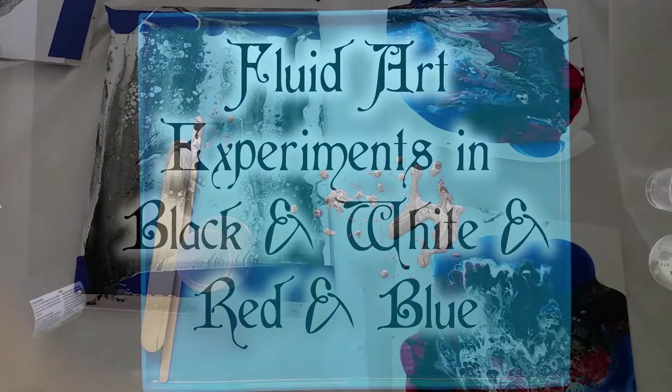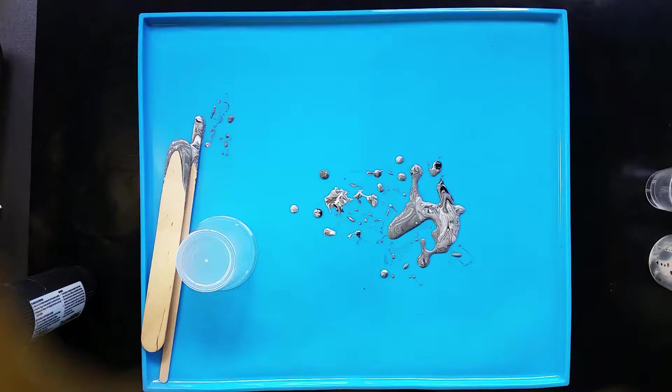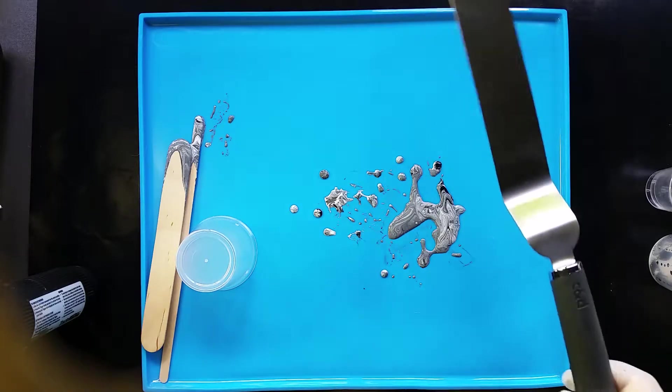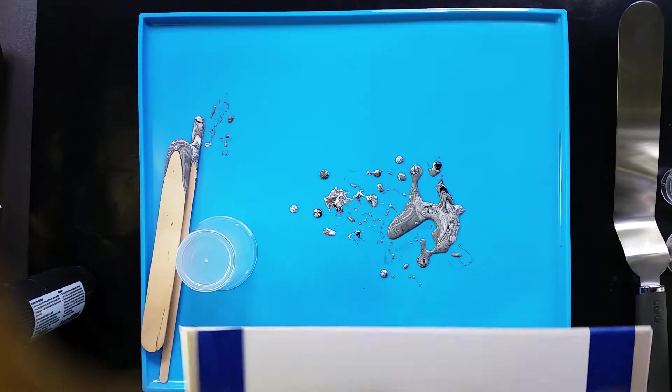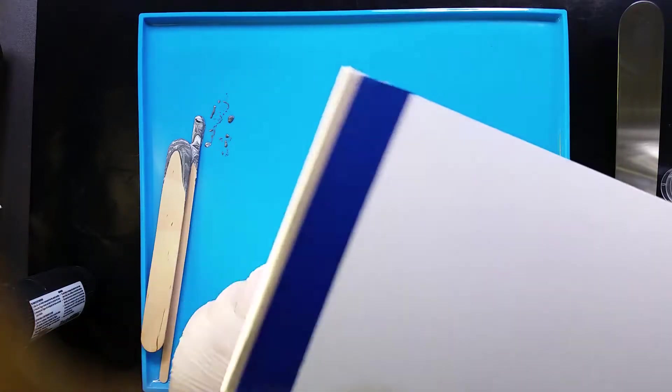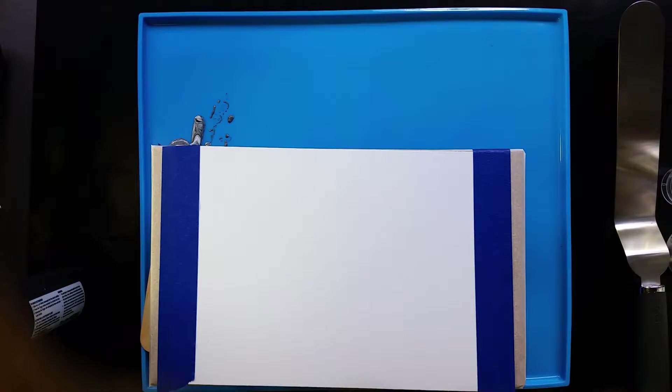Experiment number three: the swipe, which I need my swiping tool, otherwise known as a cake knife, icing knife. With a swipe you put your paint in a stripe.